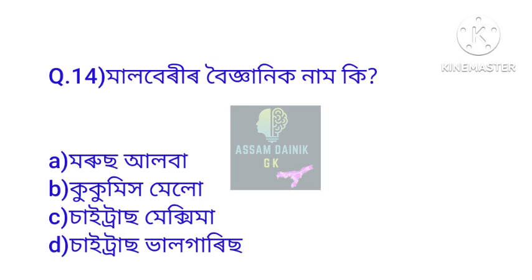Question number 14. Malburier boigyanik naam ki — what is the scientific name of mulberry? The answer is Option number A — Morus alba.